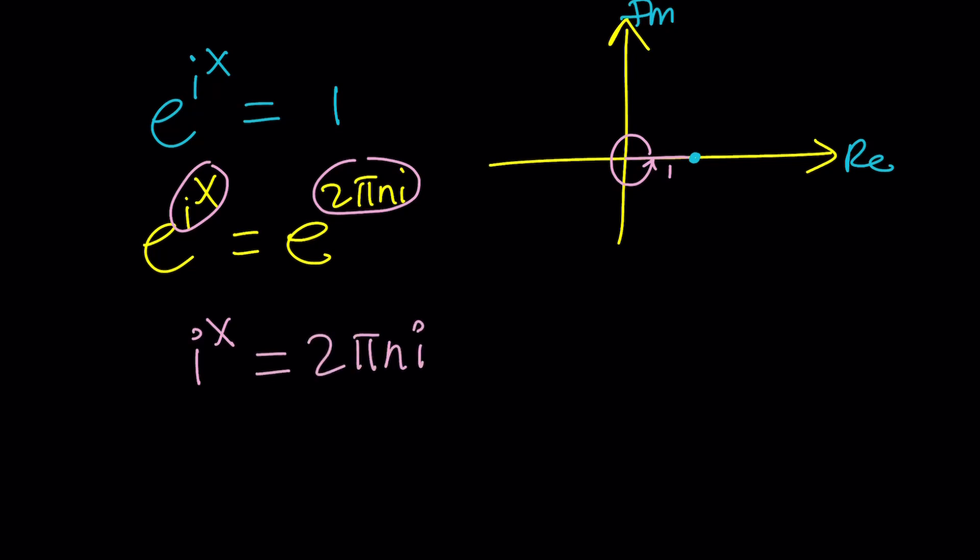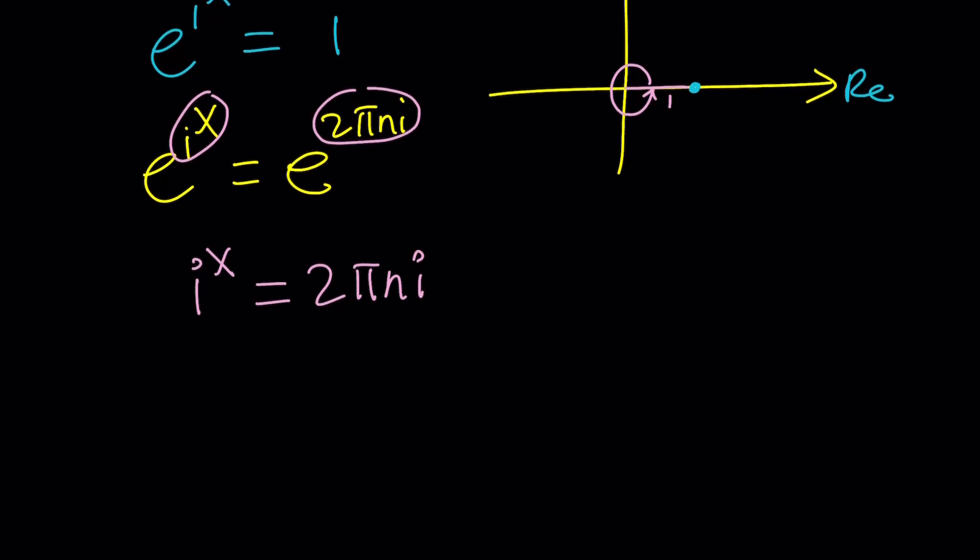i to the x equals 2 pi n i. Awesome. You've got a couple of different ways to go about it. You can divide by i and work with x minus 1, or you can just proceed as follows. I'm going to replace i with its complex form or polar form again. It's going to be e to the power i times pi over 2 plus 2 pi k. Remember that pi over 2 is the principal argument, and then you can add multiples of 2 pi. And then this will be raised to the power x.